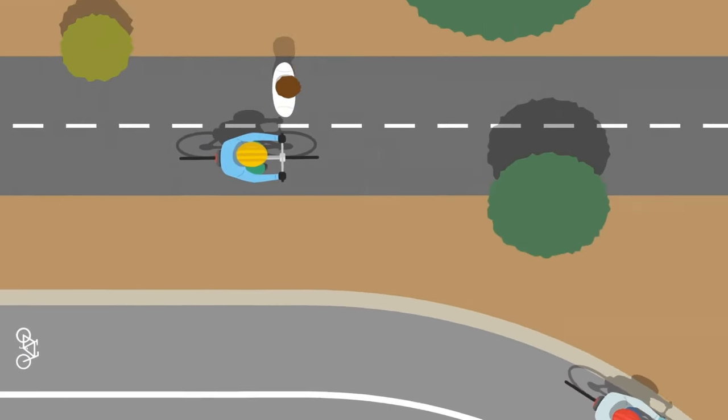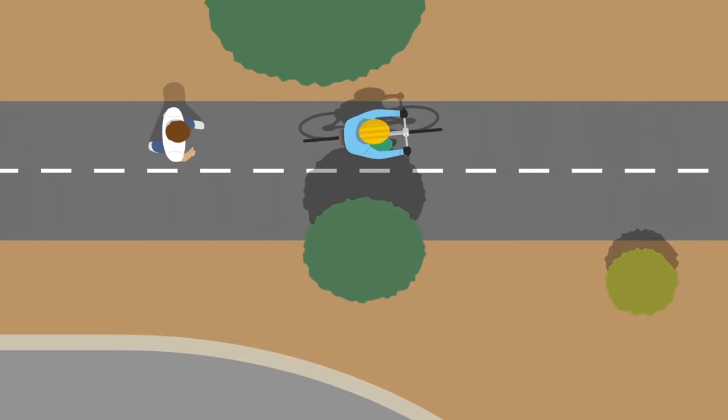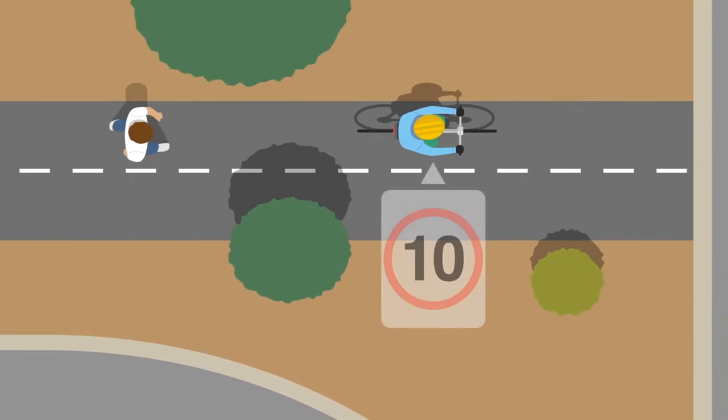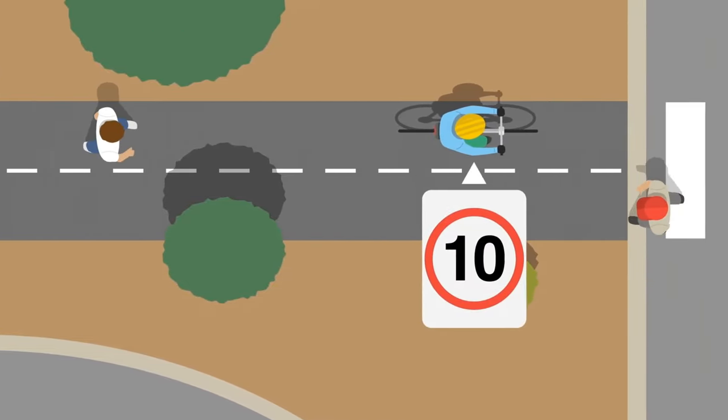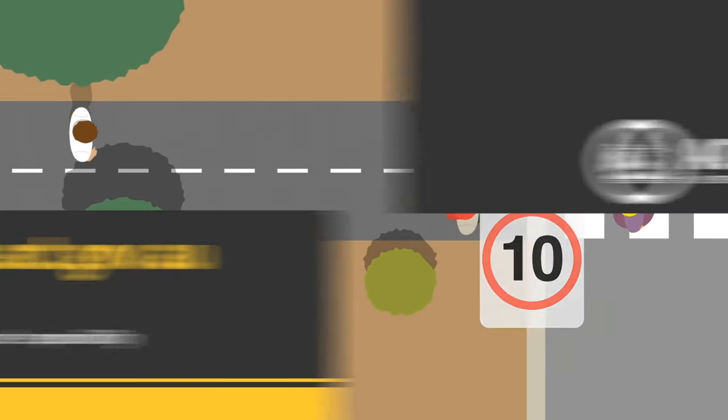Also, cyclists will be allowed to ride across all road crossings, but must slow on the approach, keep left, and give way to pedestrians.